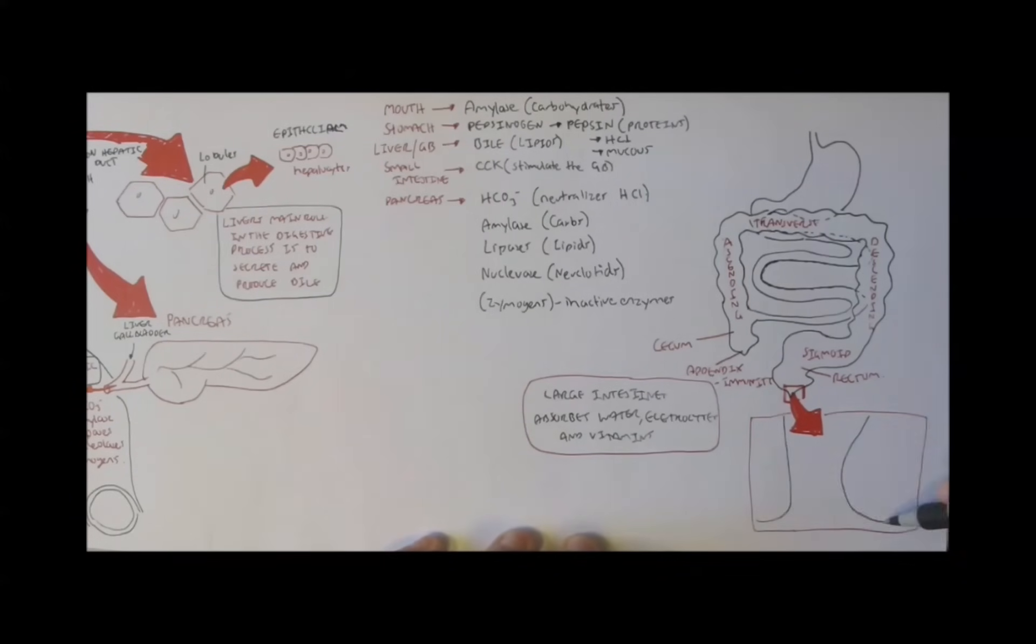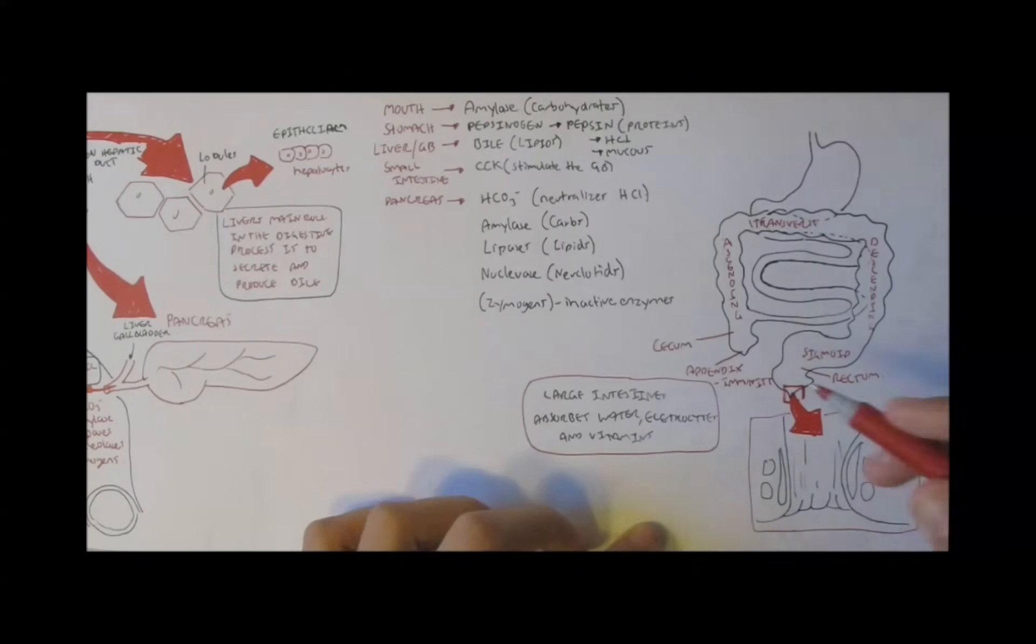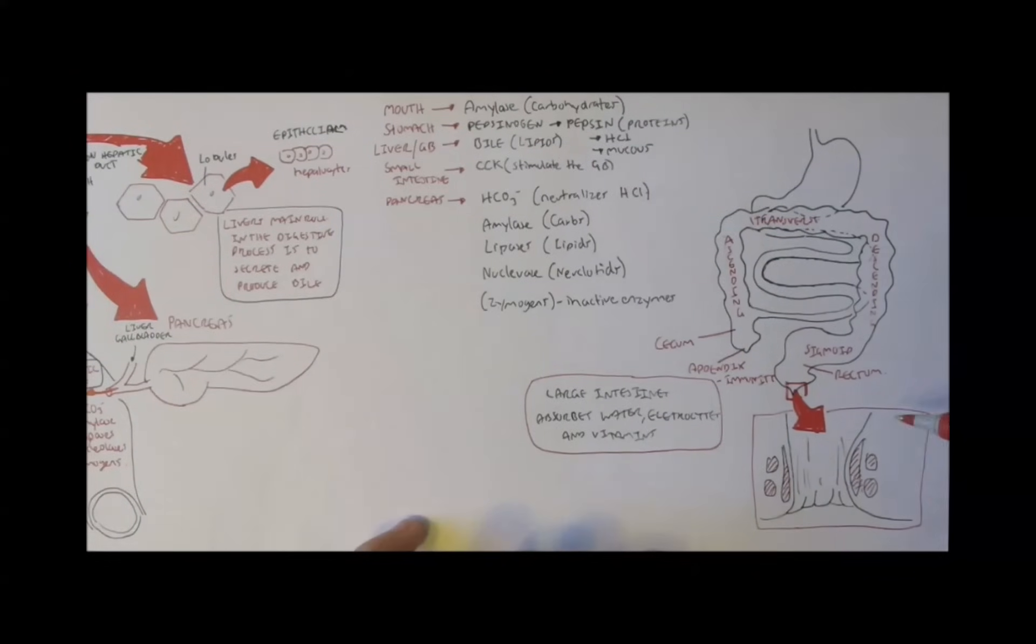The rectum has both voluntary and involuntary muscles. These muscles, the external anal sphincter and the internal anal sphincter, help us control the outflow of feces by tightening our bums. These things here. Just an interesting note.